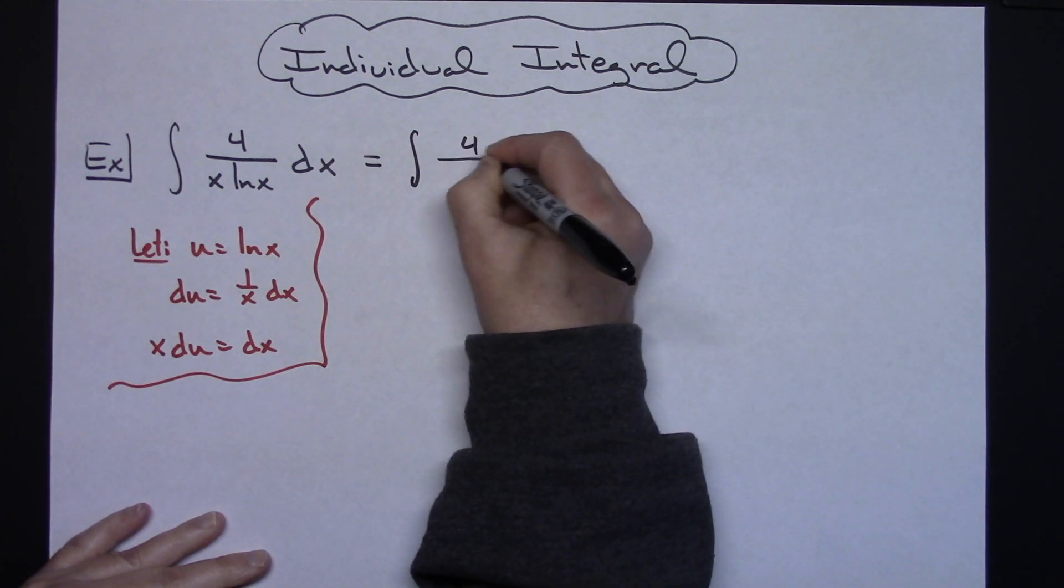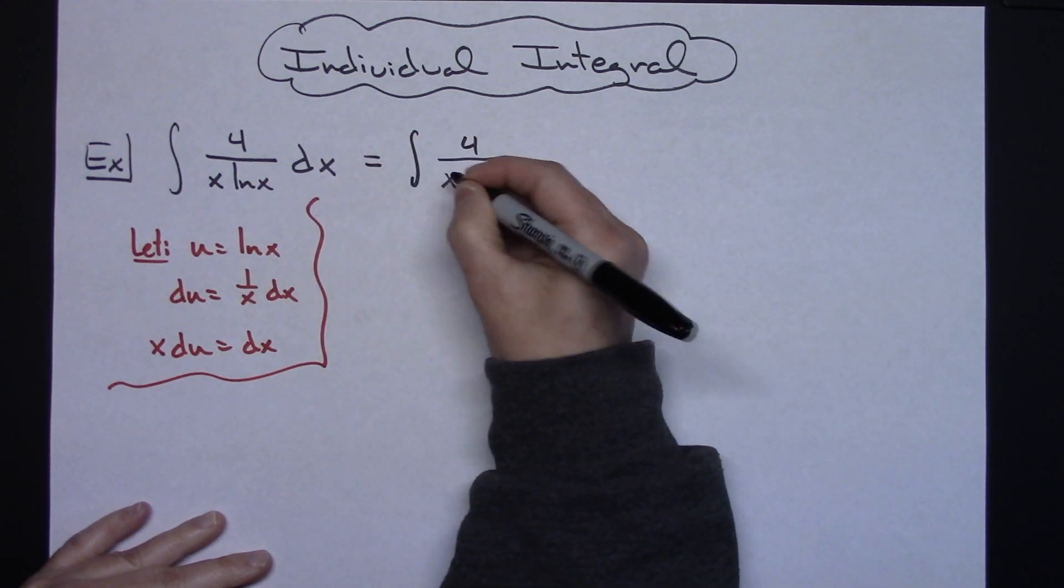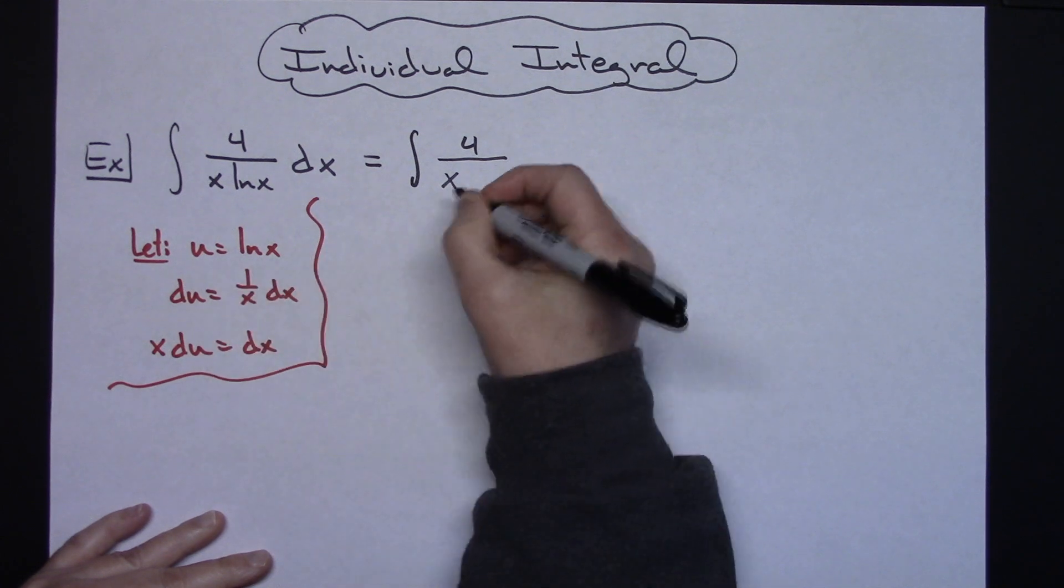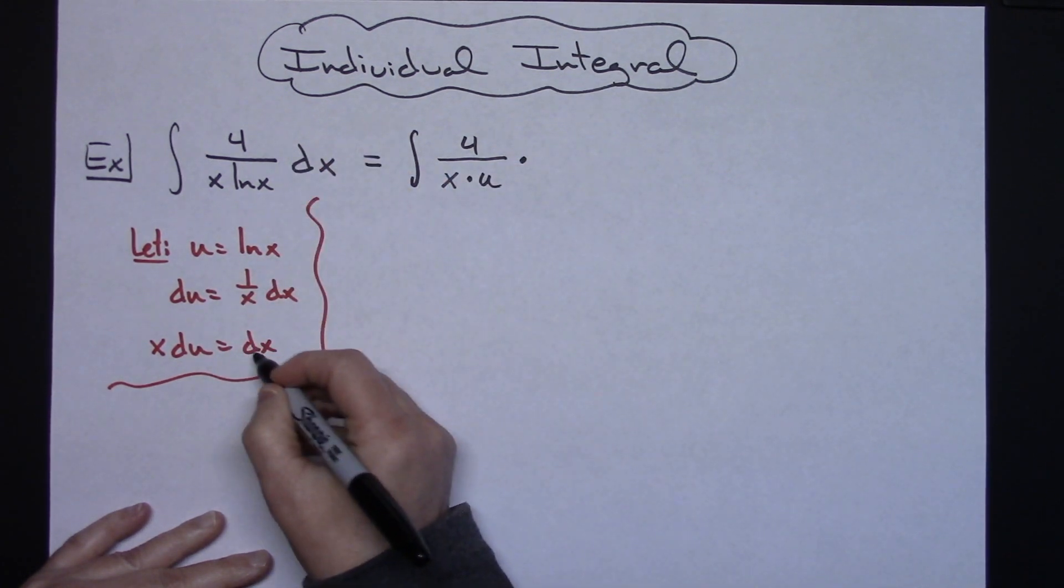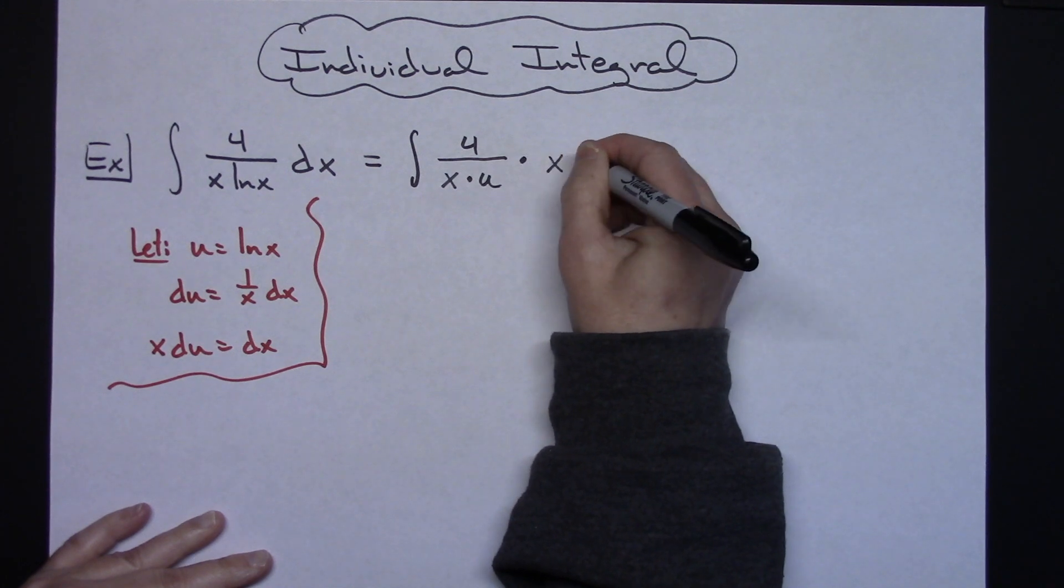So I'm going to have a 4 in the numerator. The x will still be there. I'm going to replace natural log of x with my u and I'm going to be replacing dx with what that equals: x du.